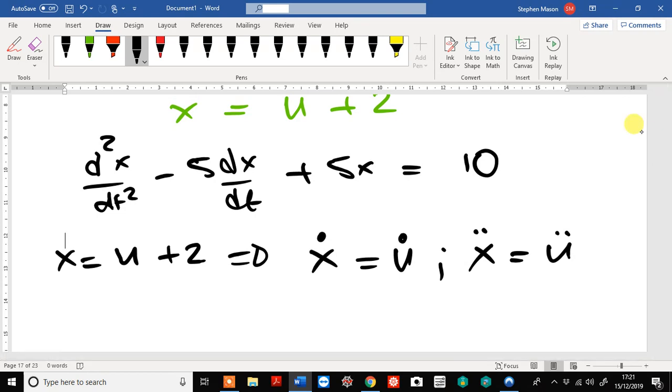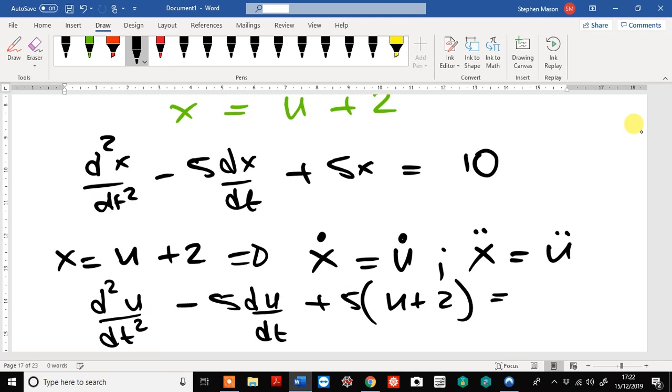So, we've got u double dot. I prefer to write it in Leibniz notation, rather than Newtonian notation, which is the way we've generally been doing it. So, we've got d squared u by dt squared. Remember, this term here, d squared u by dt squared, is actually u double dot. So, we've got minus 5 du by dt plus 5 times u plus 2 equals 10.